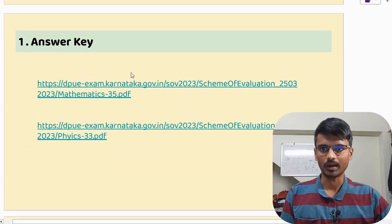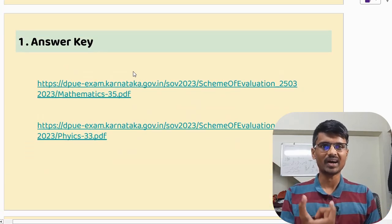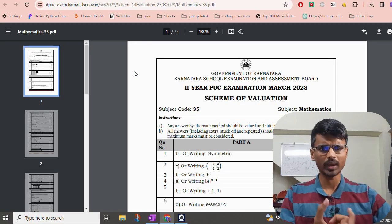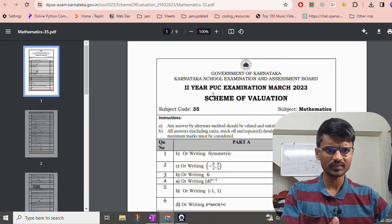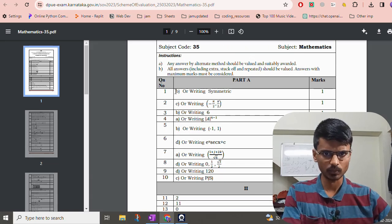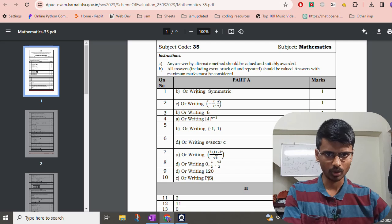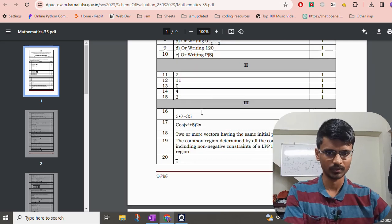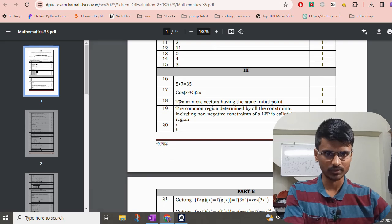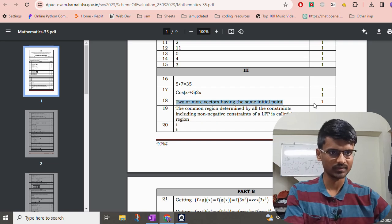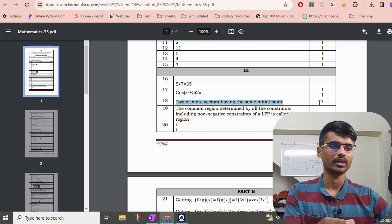First thing. There is an answer key that is released by Government of Karnataka. As you can see here, this is the scheme of valuation for mathematics. You can see here for MCQ questions, either the student has to mention the option B or he has to write symmetric. In either case, he is going to get one mark. And in this case, as you can see, they have asked some definition, like what do you mean by co-initial vector. If the student is writing this or similar to this, this teacher has to give him one mark.